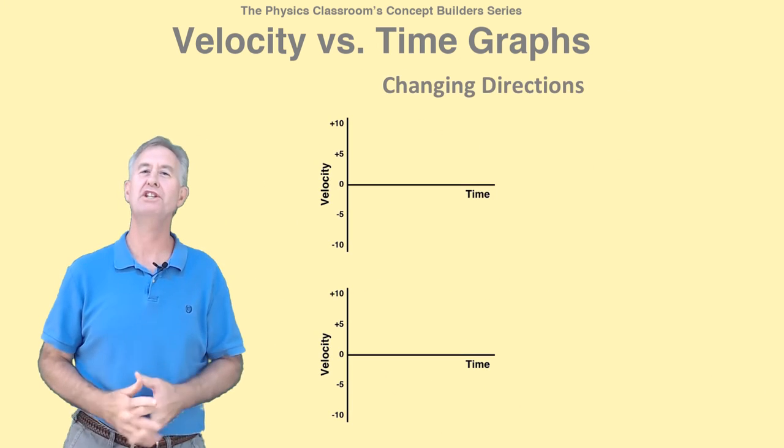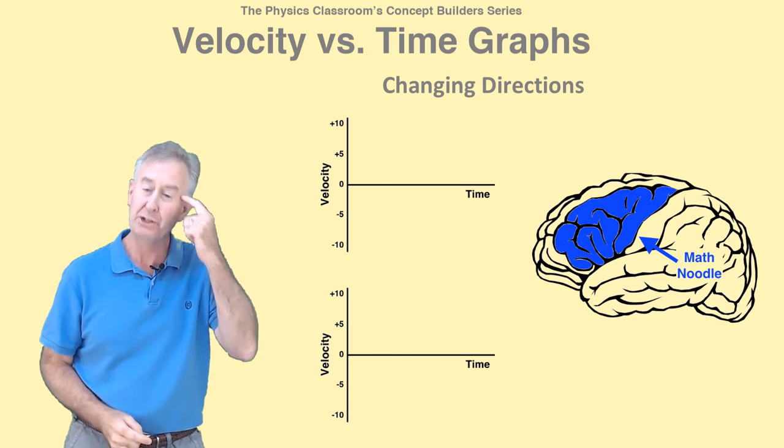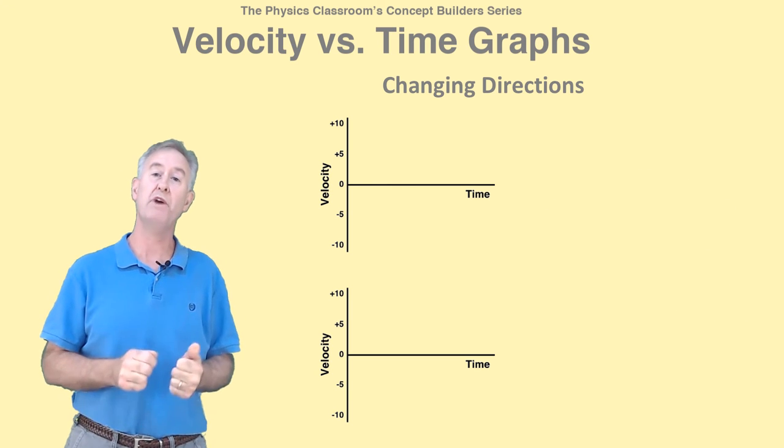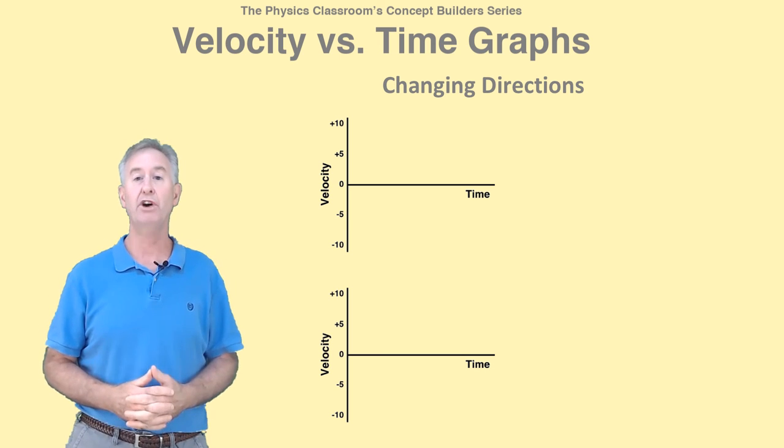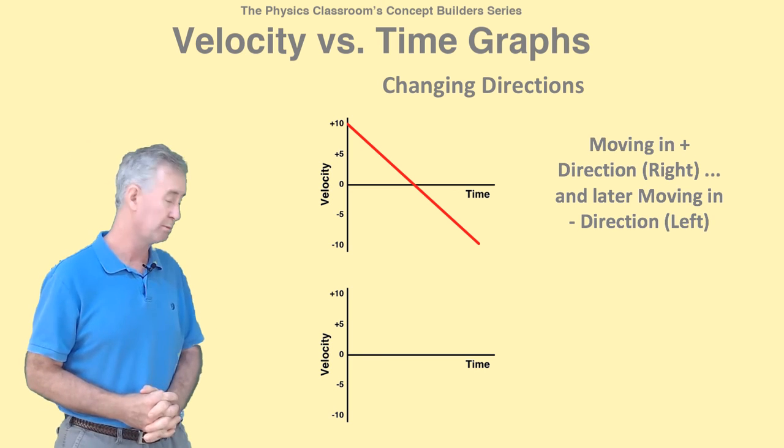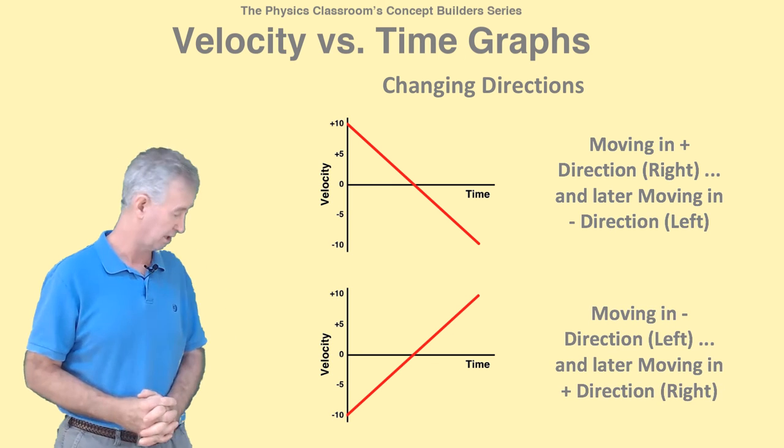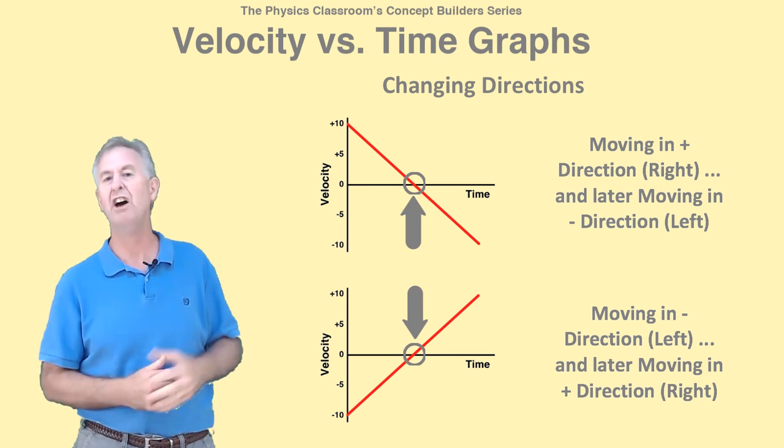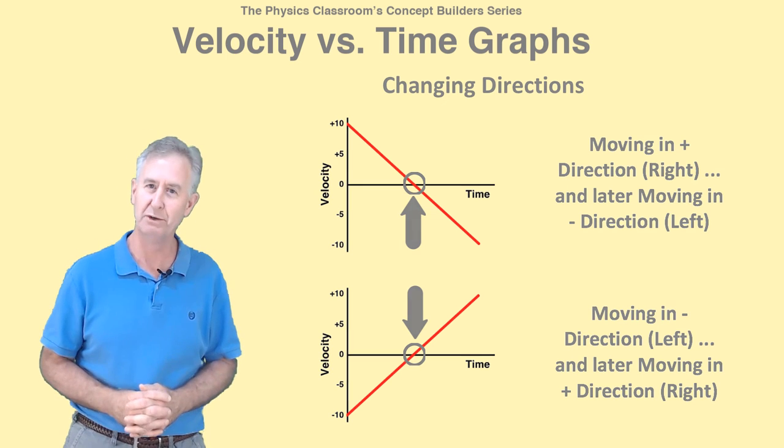We have one last motion to discuss, a changing direction motion. Once more, you have to use your math noodle on this. An object that changes direction is moving in one direction initially and at a later time is moving in the opposite direction. For instance, it could be moving with positive velocity initially and later moving with a negative velocity, like this. Or vice versa, like this. The point in time at which the line crosses from one region to the other region is the point in time at which the object changes its direction.